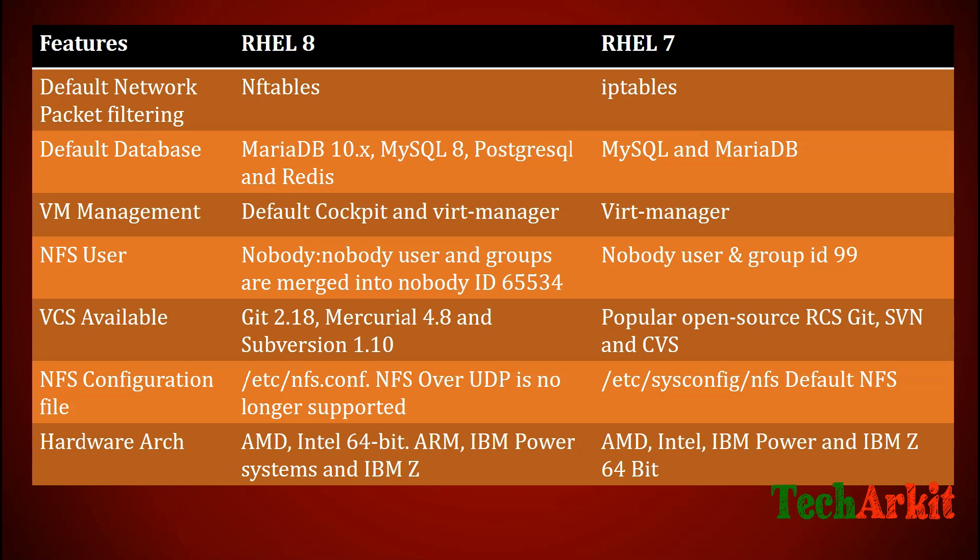For NFS configuration, the file path has changed in RHEL 8 to /etc/nfs.conf. In RHEL 7 it was /etc/sysconfig/nfs. Whenever you upgrade from RHEL 7.6 to RHEL 8, that configuration file will by default be imported into /etc/nfs.conf.